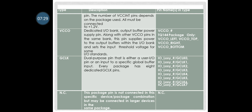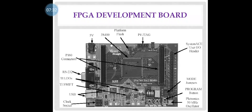Here you can see the FPGA development board. On it you can see the 5-volt power supply, port 4, JTAG, mode jumpers, program buttons, RS-232, TI Swift, USB, clock socket, and the system AC user input/output header.